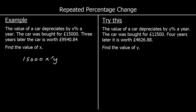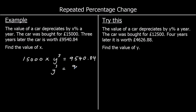I'm going to use Y here because this is going to be our multiplier, not our percentage. So £15,000 times Y — and how many years later? Three years later. So £15,000 times something three times is going to equal £9,540.84. To get Y by itself, divide both sides by £15,000. So our multiplier cubed is going to be £9,540.84 over £15,000.